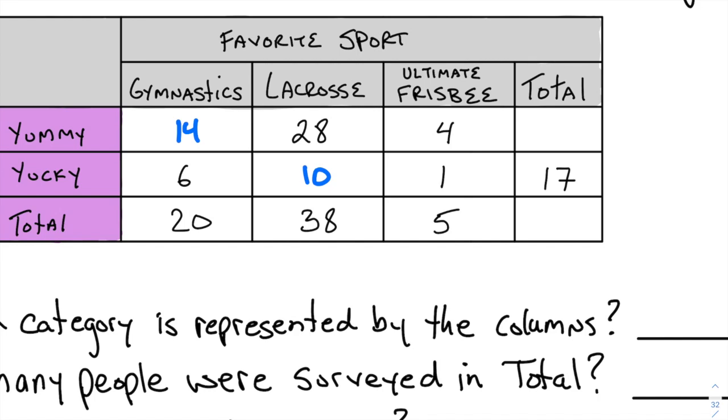Now that my numbers are filled in, I can start to go across. 14 plus 28 is 42. 42 plus 4 is 46. Now I can add my 46 and my 17 and say that there were 63 people surveyed total.